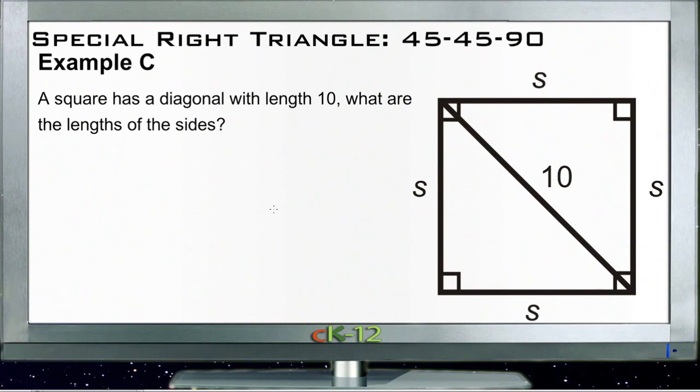Example C, we have a square with a diagonal whose length is 10, and we want the length of the sides. Well, obviously what we have right here is an isosceles right triangle, right? These two sides are going to be the same if that's a square, and then our 10-unit side represents the diagonal of that isosceles right triangle.